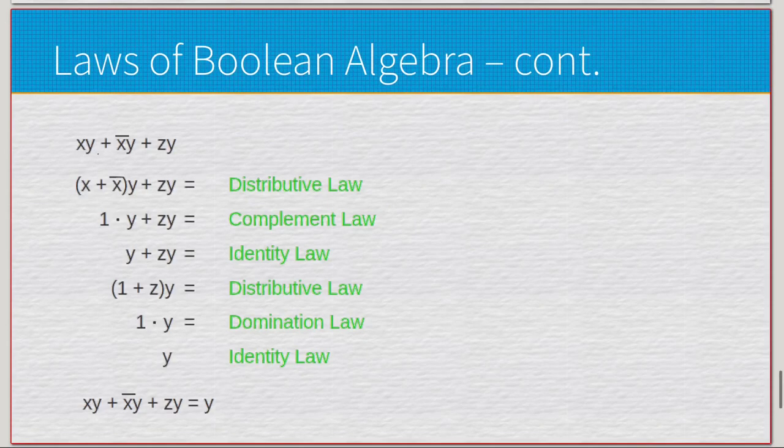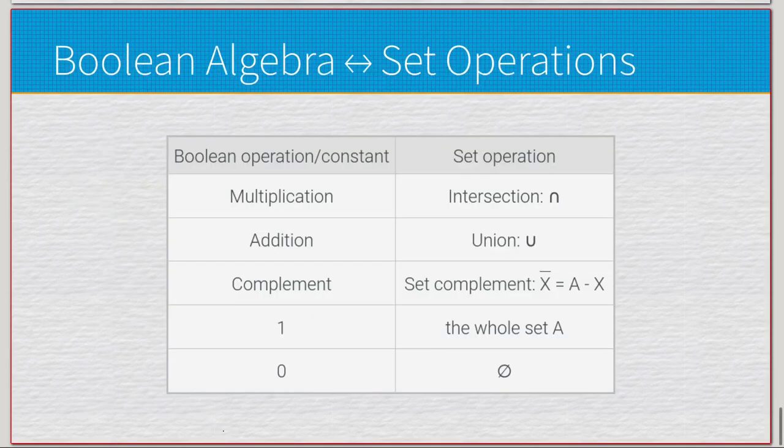We have xy + x̄y + zy and we want to simplify this. First, we can apply the distributive law and factor out the x and the complement as well, so we end up with (x + x̄)y + zy. With the complement law, which yields one, this gives us the identity law of 1×y, which gives us y. We can factor out the y's with the distributive law to get (1+z)y. One plus anything is one based on the domination law. Then 1×y is going to be y based on the identity law, so we just have y.